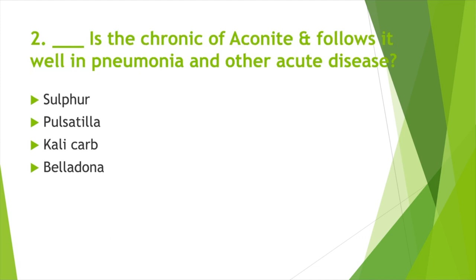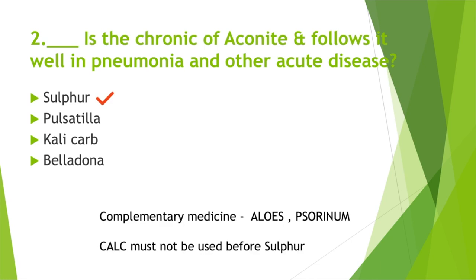Aconite follows it well in pneumonia and other acute diseases. Option A: Sulphur, Option B: Pulsatilla, Option C: Calcarea, Option D: Belladonna. Answer: Option A, Sulphur. Complementary medicines for Sulphur: Aloes and Sorinan. Calcarea must not be used before Sulphur.